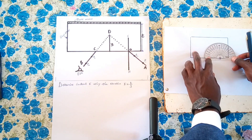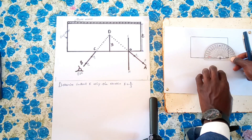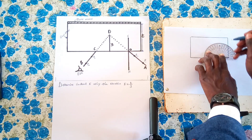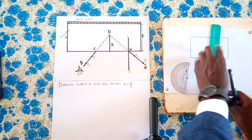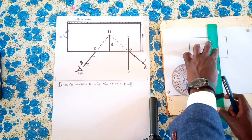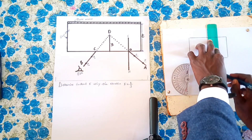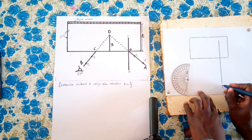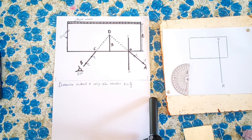We measure an angle of 90 degrees — that angle is there. Then we join the two points. So we have the normal NK.